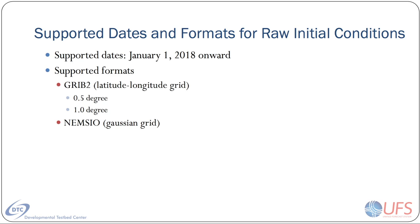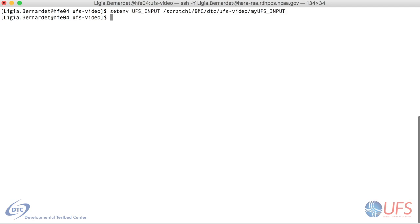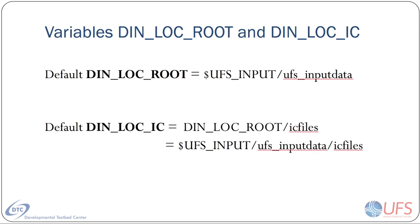The app has some capability to automatically download data and stage it on disk, but in this video I will show how to manually stage data on disk so the app can use it. There are two important variables related to staging data. The first is the environment variable UFSInput, which should be set to a directory where you have permission to stage the data. The other important variable is DINLOCIC, an internal variable in the app workflow that corresponds to the directory where the raw initial conditions are located. If it's not explicitly set, it will point to defaults set by the app.